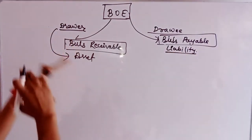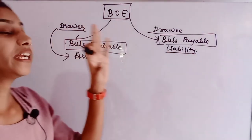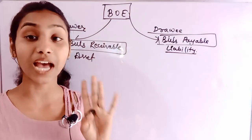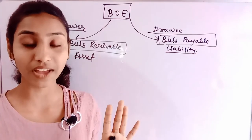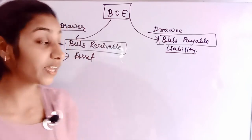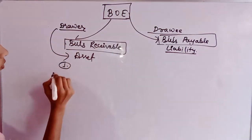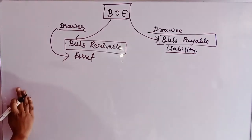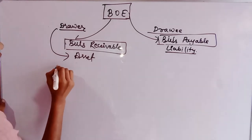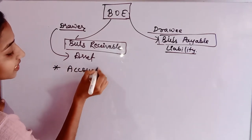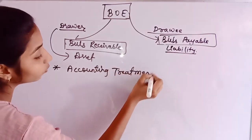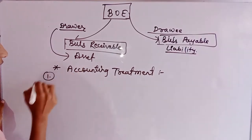In the next question, you will have to do accounting treatment in these two books. There are 4 cases of accounting treatment. We are going to understand different cases in the lecture — I think it will be the 10th lecture. Accounting treatment for 4 given cases in the bill of exchange.